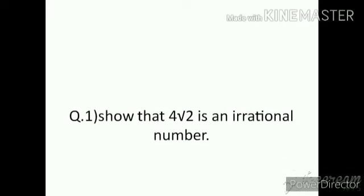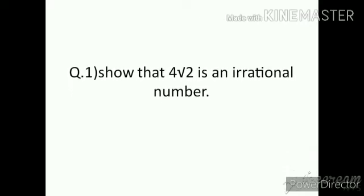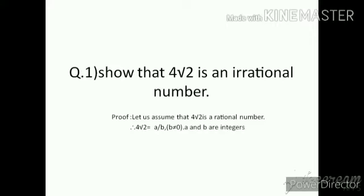Question number one: show that 4√2 is an irrational number. As we know that √2 is an irrational number, we have to prove this. Let us assume that 4√2 is a rational number. Therefore, 4√2 = a/b, where b ≠ 0 and a and b are integers. Here we have used the rational number definition. Therefore, √2 = a/(4b).